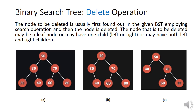Now we will consider the deletion operation, where the deletion operation deletes a node from a binary search tree. In the deletion operation, the node to be deleted is first found in the given BST using the search operation, and then the node is deleted. The node to be deleted may be a leaf node, or may have one child (either left or right), or may have both left and right children.